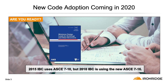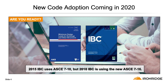Currently, most authorities having jurisdiction, or AHJs, are still relying on ASCE 710 guidelines for their permitting. However, 2020 marks the implementation of the 2018 International Building Code, updated with ASCE 716. Adoption of the new codes is on the horizon, and we want to make sure you and your colleagues are ready for it.